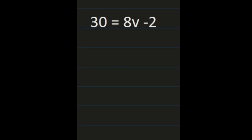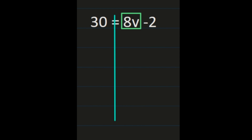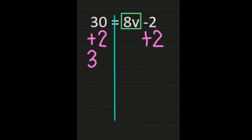For our second example we have 30 equals 8v minus 2. Notice the variable is on the right-hand side, but our steps don't change. I'm going to box 8 times v because that's what I need to get by itself first. The line through the equal sign helps keep both sides balanced. To get 8v by itself, I have 8v minus 2, so I need to add 2 — the inverse operation. Adding 2 to the right means adding 2 to the left. 30 plus 2 is 32, and negative 2 plus 2 is 0.